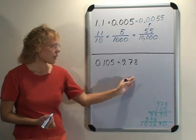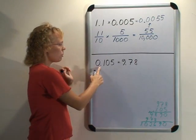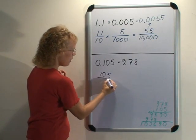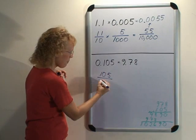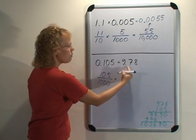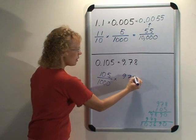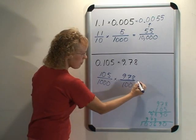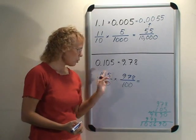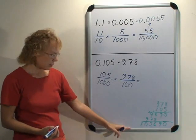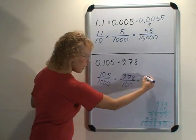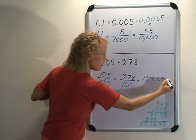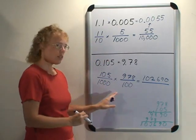Okay, here's another example. We have 0.105 and 9.78. We'll write 0.105 as a fraction: 105. And three decimals means thousandths. And now we multiply on top these two big numbers. I've done the multiplication here.